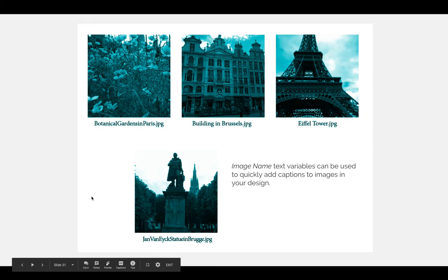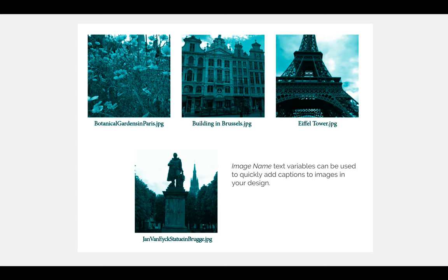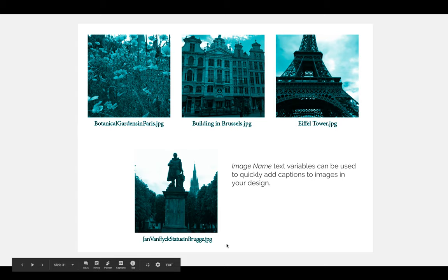In this example, I have used a text variable to make sure that every picture in my project includes the name of the picture, and I made sure the file name matched the picture in a way that would be okay to use in a project. Notice the difference between 'Building in Brussels' and 'Eiffel Tower' with spaces between the words, how nice it looks compared to the run-on of 'Botanical Gardens in Paris' and 'Jan van Eyck's statue in Bruges.'